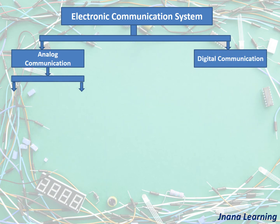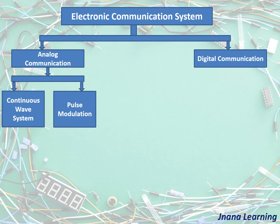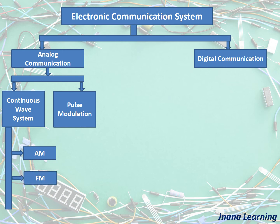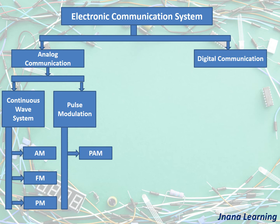Under analog communication, we have continuous wave system-based communication and pulse modulation-based communication. Under continuous wave systems, we have communication based on amplitude modulation, frequency modulation, and phase modulation. Under pulse modulation, we have pulse amplitude modulation, pulse width modulation, and pulse position modulation-based communication.